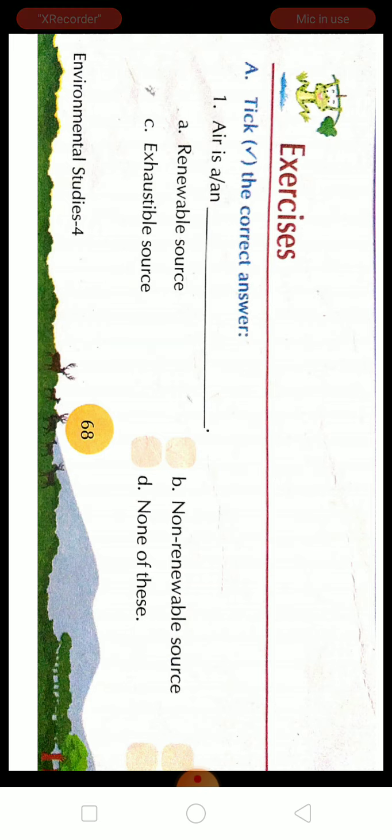Renewable means jo apne aap ko renew karte hain after some time. Non-renewable jo khatam ho jate hain, exhaust ho jate hain. So air renews itself after a certain period of time. It is present in an abundant form, very large amount mein hai. Jaldi khatam hone wali nahi hai. So the correct answer will be renewable resource.